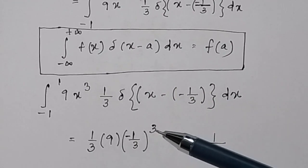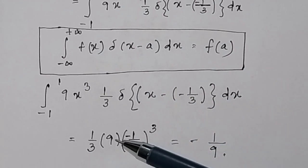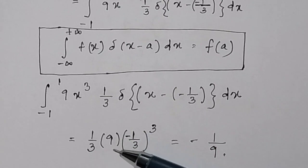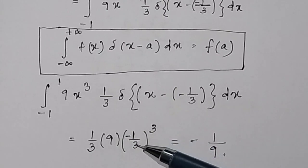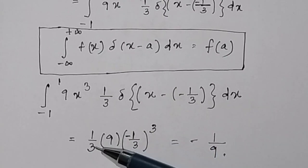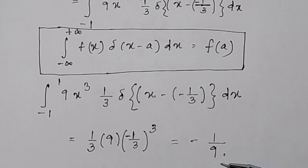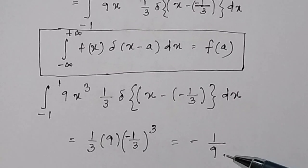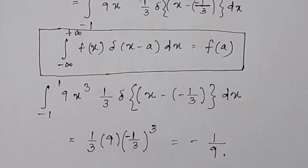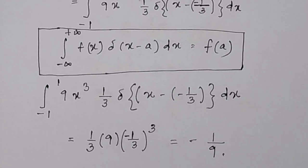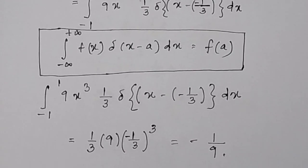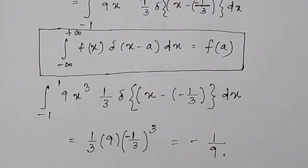So we have minus 1 over 3 cubed, and this is 3 squared. In the bracket we have minus 1 over 3, again multiplied by 1 over 3, which gives minus 1 over 9. In this way, by applying different properties of the delta function, you can evaluate many complicated integrations. Thank you.